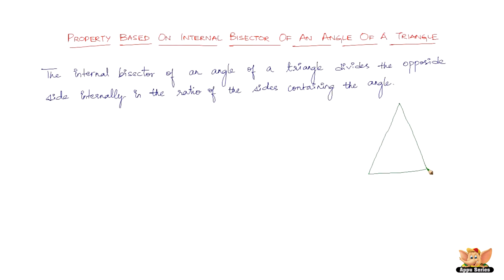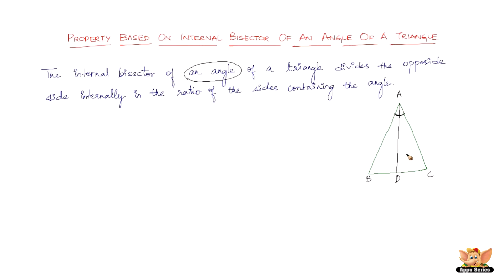Let's name the triangle A, B, and C. Angle A is an internal angle of the triangle. Now, it talks about the internal bisector of an angle. Let's take angle A — the internal bisector of this angle is, let's say, the line AD. So AD bisects angle A of the triangle.